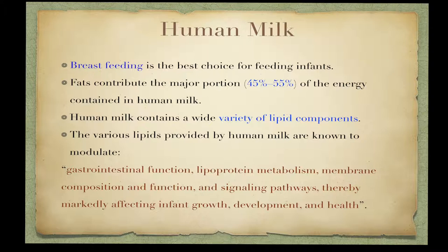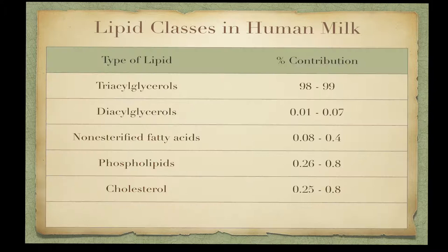Although their precise functionalities are not yet fully understood, the various lipids provided by human milk are known to modulate gastrointestinal function, lipoprotein metabolism, membrane composition and function, and signaling pathways, thereby markedly affecting infant growth, development, and overall health. Mammary alveolar cells produce milk fat globules containing a core predominantly consisting of triacylglycerol.